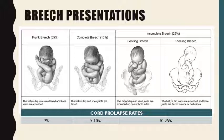For the complete breech, that's going to be 10%, and that's when both the hips and knees are flexed. Then incomplete breech would be either footling or kneeling, so you have some type of flexion or extension in the legs.